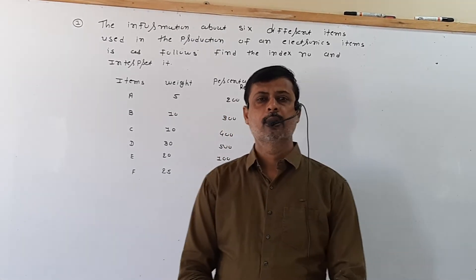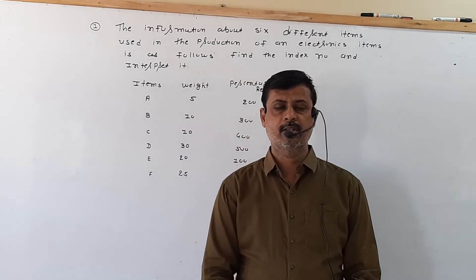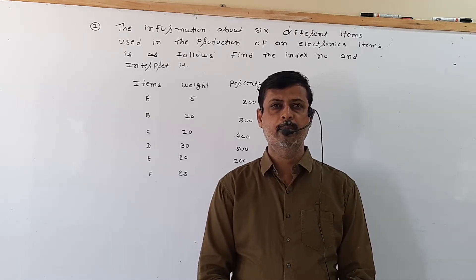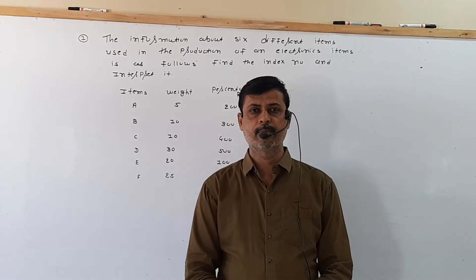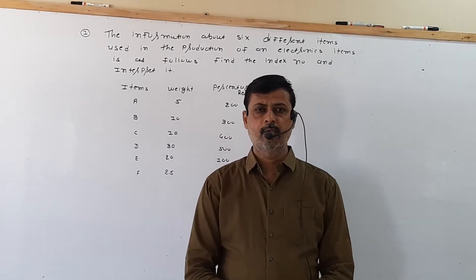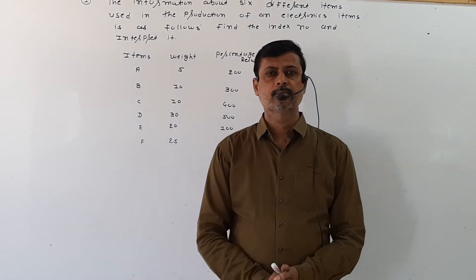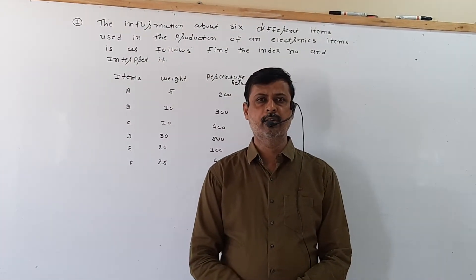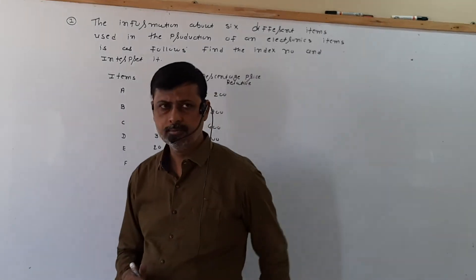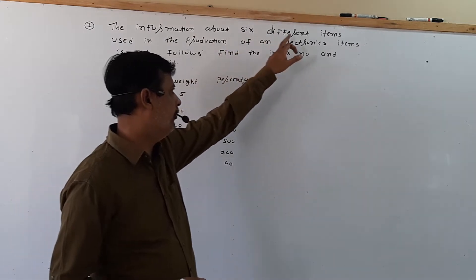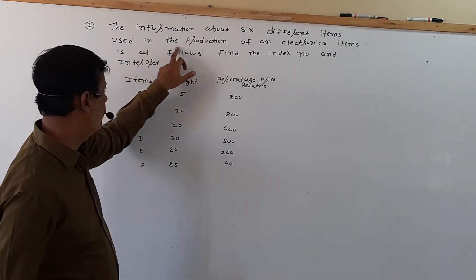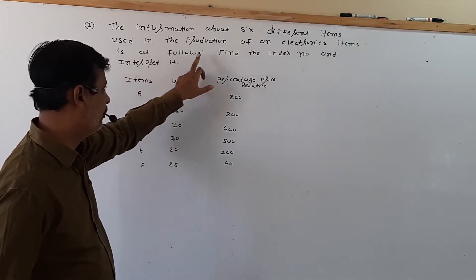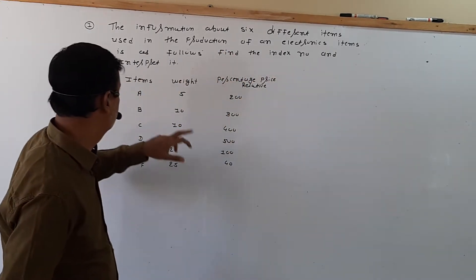Hello friends. In the previous lecture we discussed about conversion of fixed base index into chain base and chain base index into fixed base. Today we will learn about the family budget index and total expenditure method index. Here the information about six different items used in the production of electronics items is as follows — find the index number and interpret it.